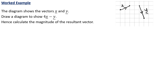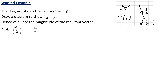For our final example, we still have the same vectors x and y. This time we want to draw 4x minus y and calculate the magnitude of the resultant vector. The vector 4x is (8, 4) — 4 times as long as x. The vector minus y is the negative of (1, -3), so that's (-1, 3). Note that the arrow for minus y is going to be switching direction.